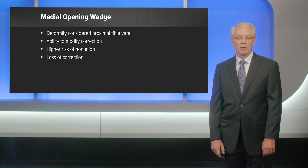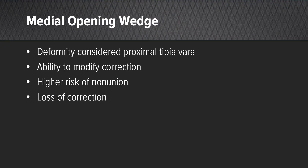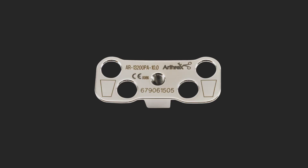There are, however, some drawbacks. There's a higher risk of nonunion because the osteotomy is performed under tension and distraction, and we all know that osteotomies heal better under compression. There's also the possibility of loss of correction when the patient begins weight bearing. The loss of correction can be dealt with by using plates with spacers, which are more reliable in maintaining that correction. That is why I use the Arthrex high tibial osteotomy plate.